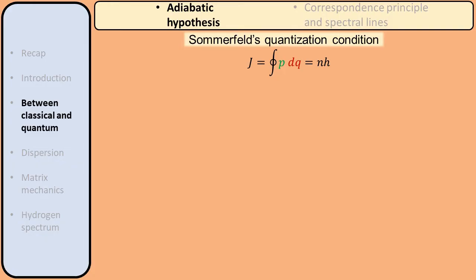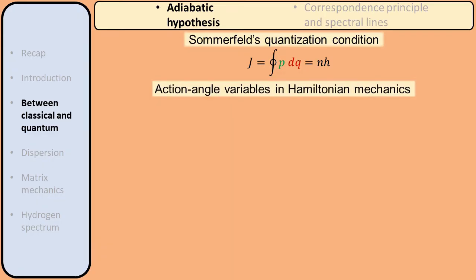Another example is Sommerfeld's quantization condition, which says that the integral of a particle's momentum over one period of its motion is quantized. This integral is called the action variable, and it is known in classical Hamiltonian mechanics that the action variable is an adiabatic invariant. So the adiabatic hypothesis establishes a link between classical mechanics and quantum mechanics. A deeper understanding of the action variable will be helpful later. In Hamiltonian mechanics, there is a certain choice of coordinates called the action-angle coordinates. To understand what this means, let's briefly recall the basic concepts of Hamiltonian mechanics.